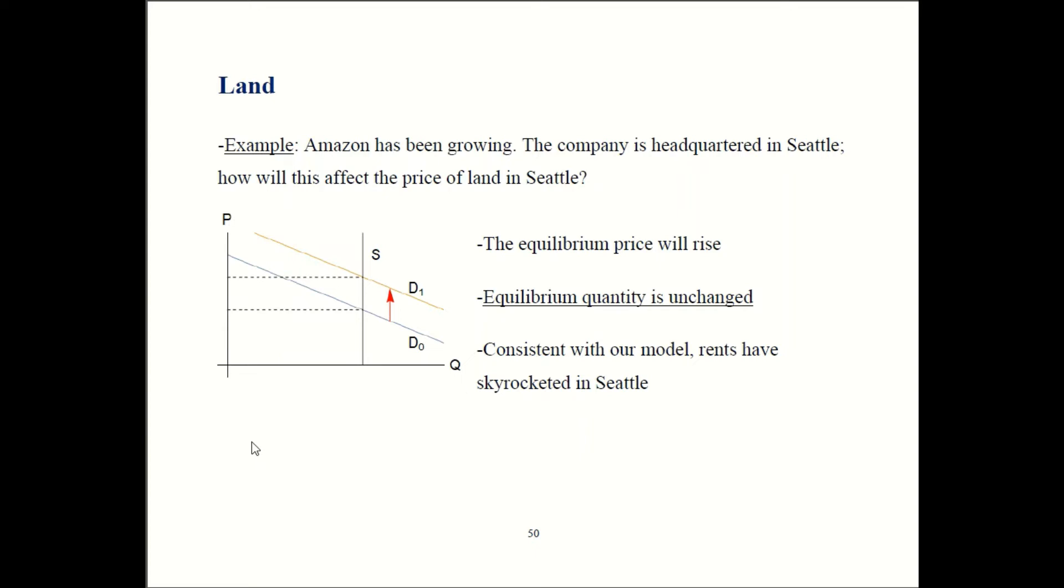Demand is definitely going up. What that does is that it's going to increase the price of land in Seattle. You will not be surprised to hear that land in Seattle has gotten a lot more expensive in the last decade or so. Equilibrium price rises. Now the equilibrium quantity is going to be unchanged. That's because there's still a fixed amount of land in Seattle. In most other markets when we get more demand that also boosts quantity, but here supply is fixed. Quantity does not change.